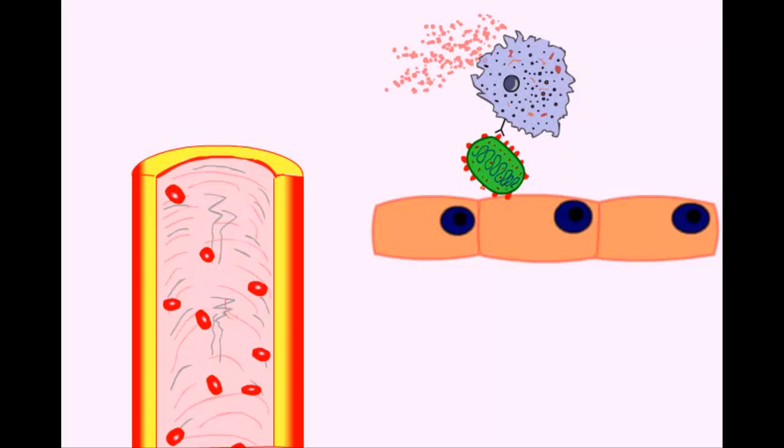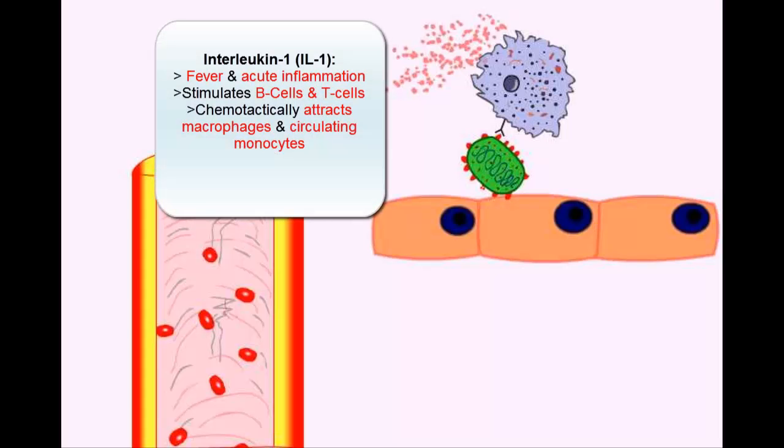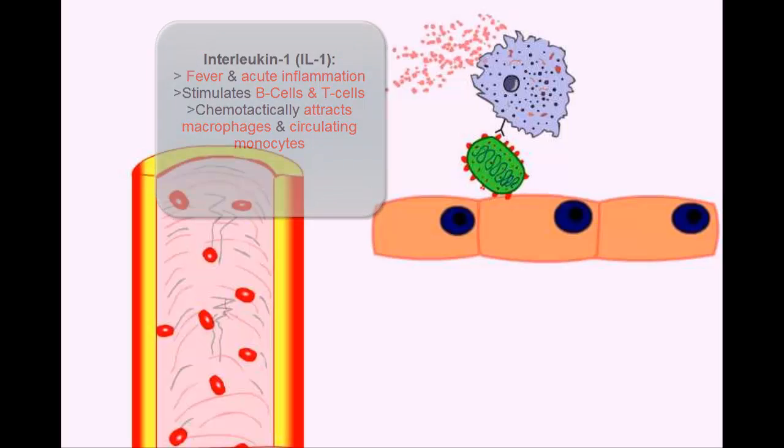And the macrophage also begins to secrete chemokines. It secretes interleukin-1, which causes fever, acute inflammation, and stimulates the adaptive immune cells, which are your B cells and T cells. And it chemotactically attracts existing macrophages and circulating blood monocytes into the area to differentiate and give us more macrophages.